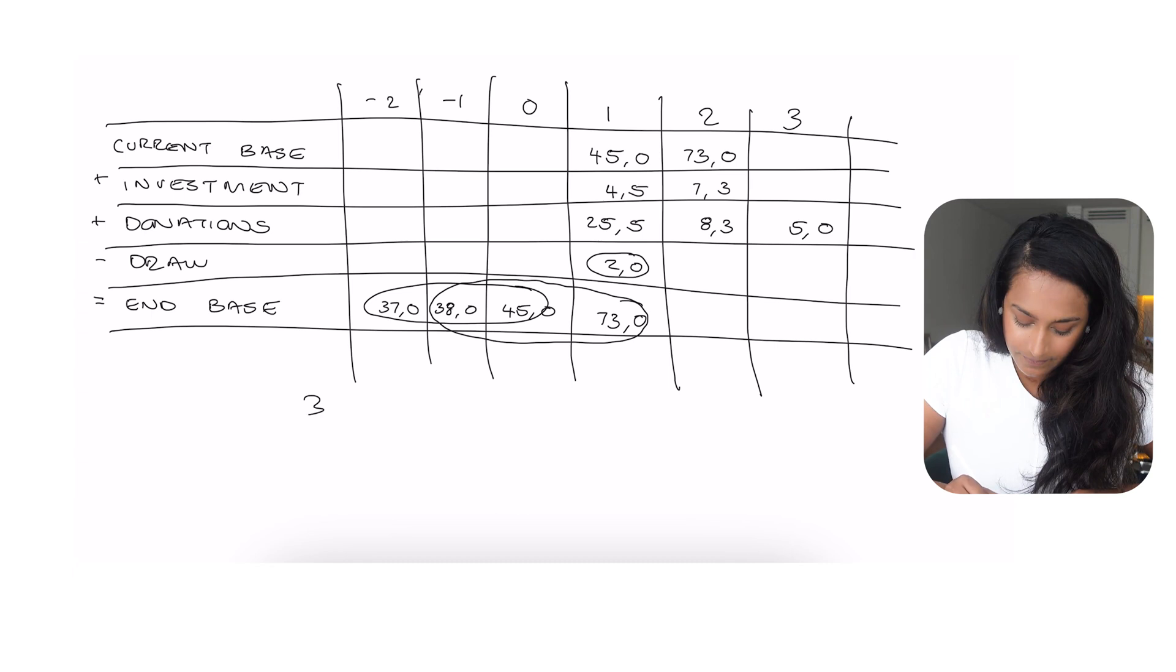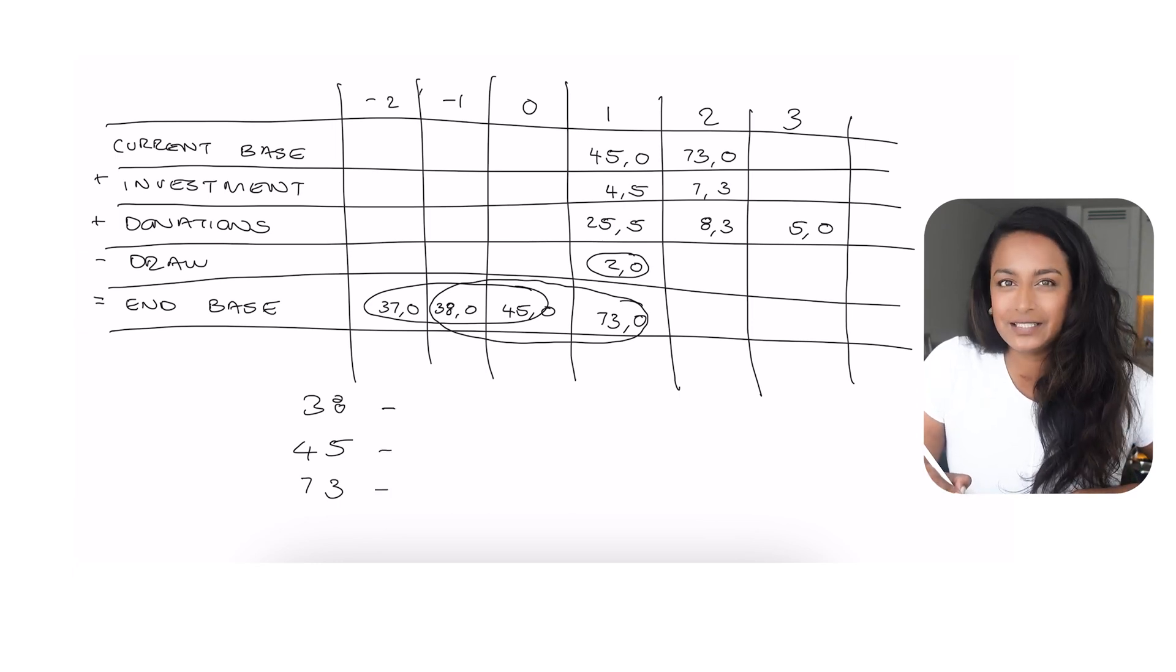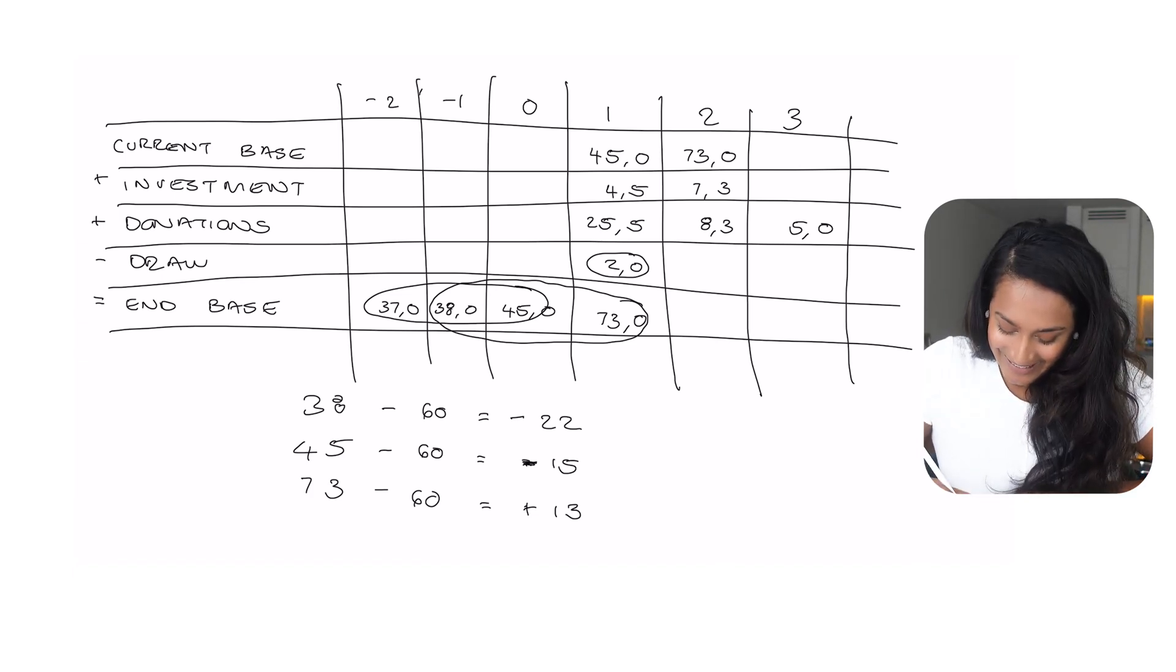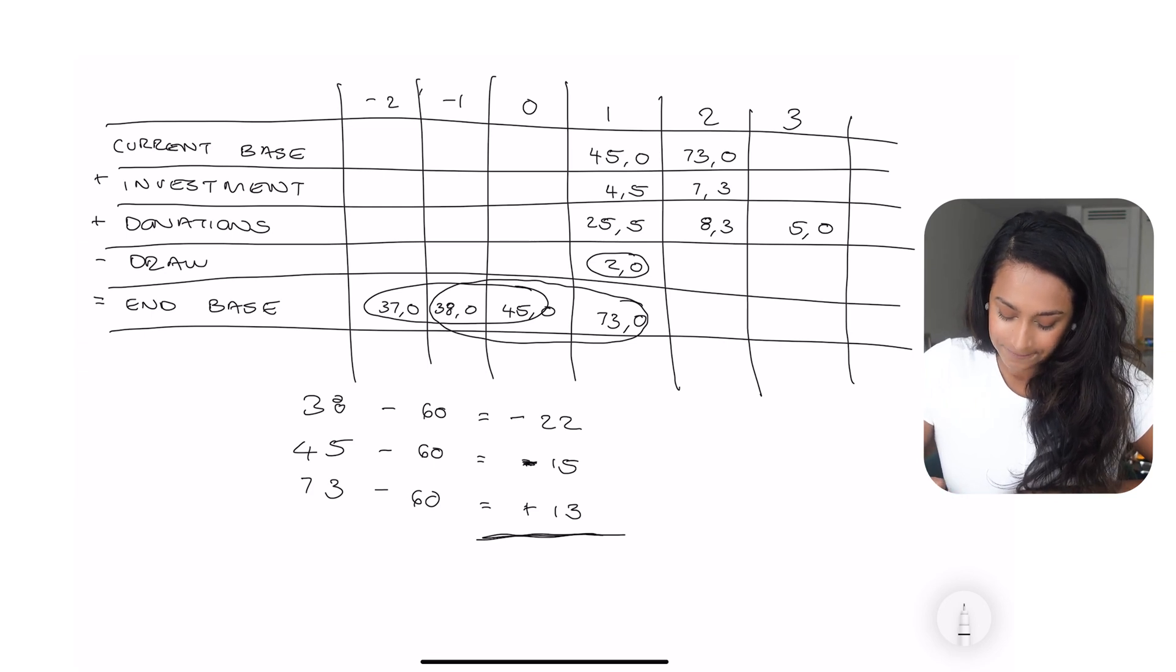So here we've got 38, 45, and 73, and we need to know the average of this. So as a guess here, I'm going to go with 60. All right. So what we've got here is negative 22. We've got negative 15, and we've got positive 13. Okay, I can tell that I'm way off on this one. So what we have here is the sum of the residuals is now negative 24. And so I'm off by quite a lot. My guess was too high. So I'm going to divide negative 24 by 3, which equals negative 8. So I was off by 8. So my average is actually 52.